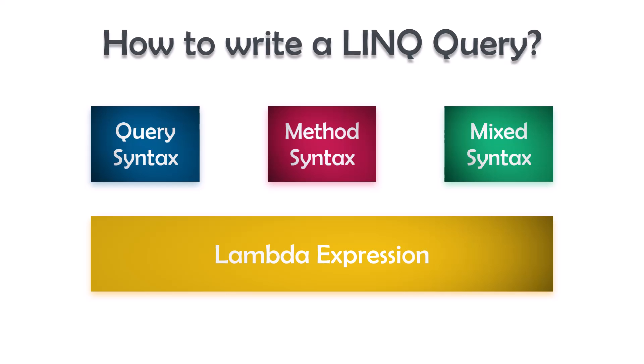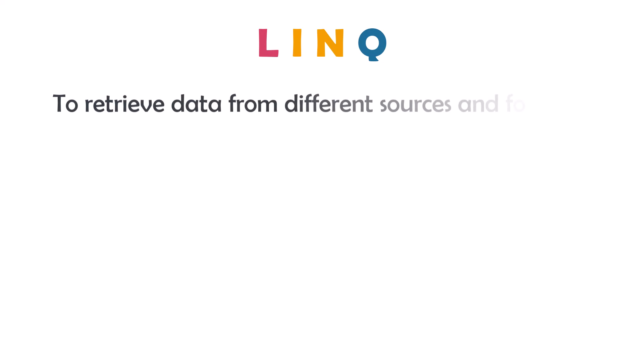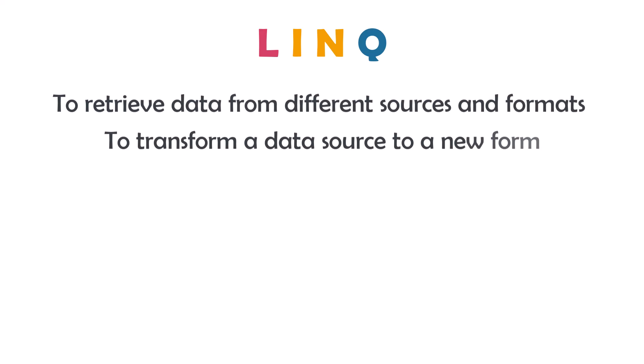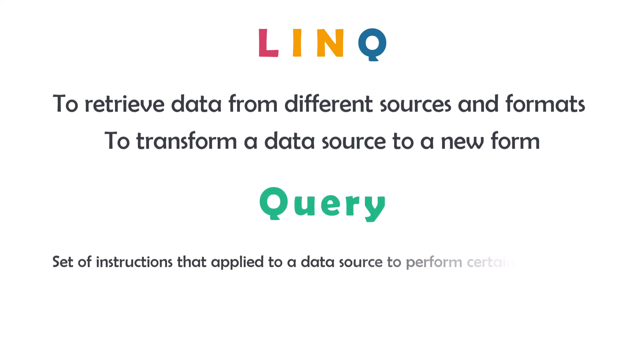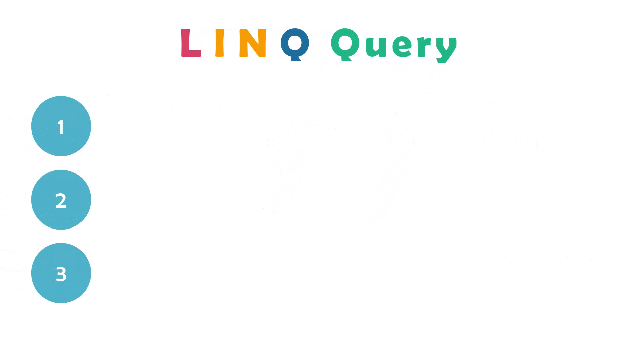Before talking about the three ways, let's do a recap about LINQ — what it means and what are the requirements for a LINQ query. LINQ is to retrieve data from different sources and formats, transforming a data source to a new form after doing some calculations or filtering the data. A query is a set of instructions applied to a data source to perform certain operations. A LINQ query consists of three parts: initialization, condition, and selection.